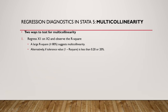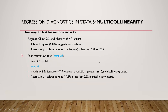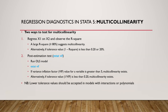Alternatively, if we subtract the R-square from 100 and have a value close to 20%, then we have a problem. We can also use the post-estimation test, that is the VIF — variance inflation factor. First we run the OLS model, and then we do the post-estimation test. If the variance inflation factor value is greater than 5, we have the same problem. Or if the tolerance value is less than 0.2, then we have a multicollinearity problem.